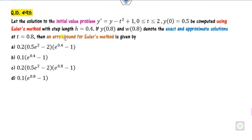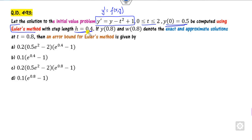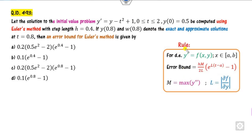The next question gives an initial value problem with y' = F(x, y) and an initial condition, solved by the Euler method with a given step size. They ask for the error bound. The error bound formula for the Euler method involves M (maximum of the second derivative), L (the Lipschitz constant), step size h, and the interval. Here T = 0.8.